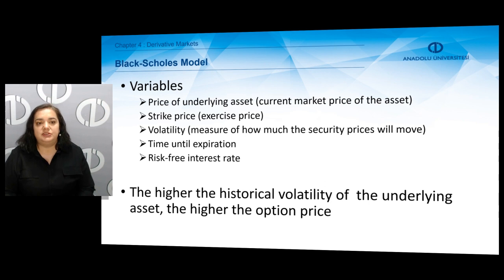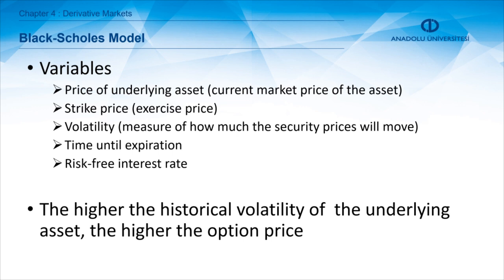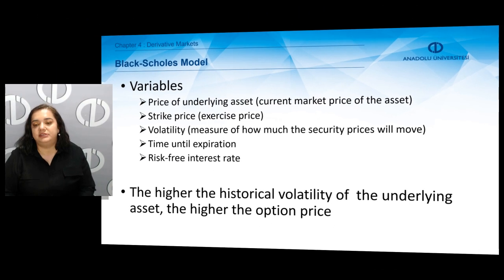The variables used in the Black-Scholes model include the price of the underlying asset, the strike or exercise price, volatility — which is a measure of risk and how security prices will move (since future volatility is unknown, historical standard deviation of returns is typically used) — time until expiration, and the risk-free interest rate. The higher the historical volatility of the underlying asset, the higher the option price. The greater the riskiness of the underlying asset, the higher the option premium. That was all for chapter four.